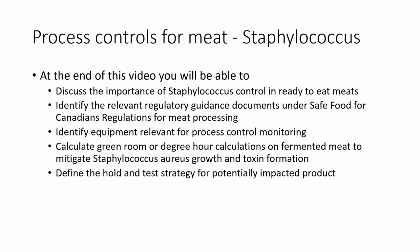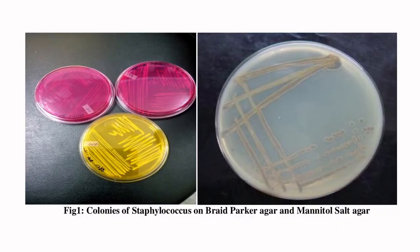It involves basic addition and multiplication — not rocket science math. We'll also define the hold-and-test strategy for potentially impacted product, so that if you think staph may be growing in your product, you can mitigate it without throwing out all your product. Staph aureus is one of the priority pathogens in Canadian meat processing.